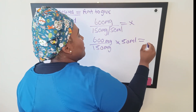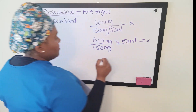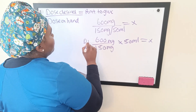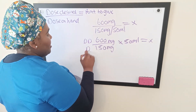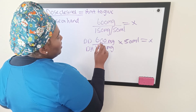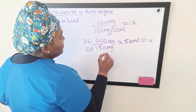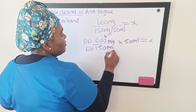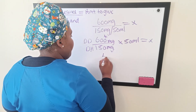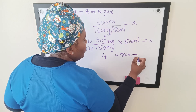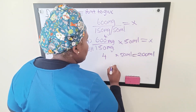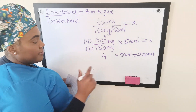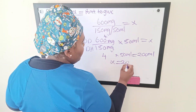That brings us to the amount to give, which is X. So we divide our dose desired — DD — by our dose on hand — DH. Dose desired 600 milligrams divided by 150 milligrams equals 4. Multiply by the quantity, 50, and it's going to be 200 mils. So 200 mils is how much will give this patient the full 600 milligrams. X equals 200 mils.